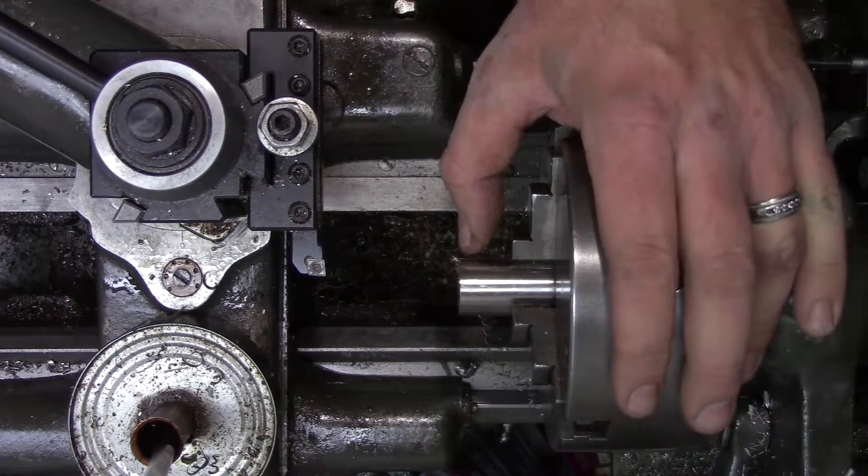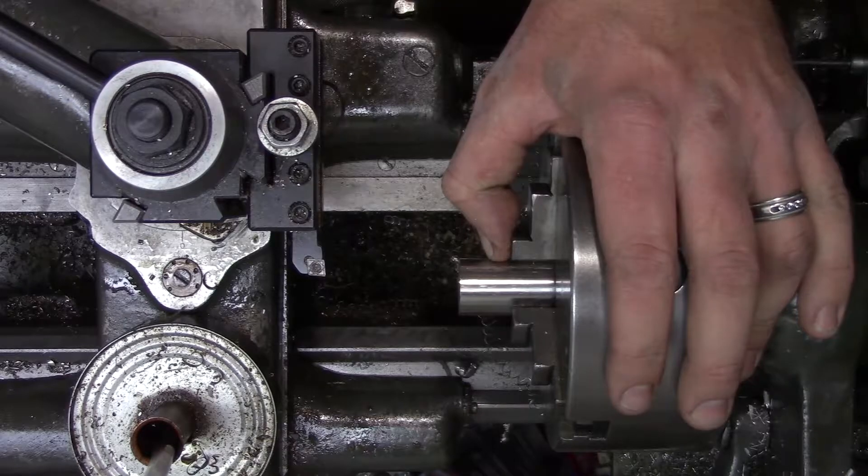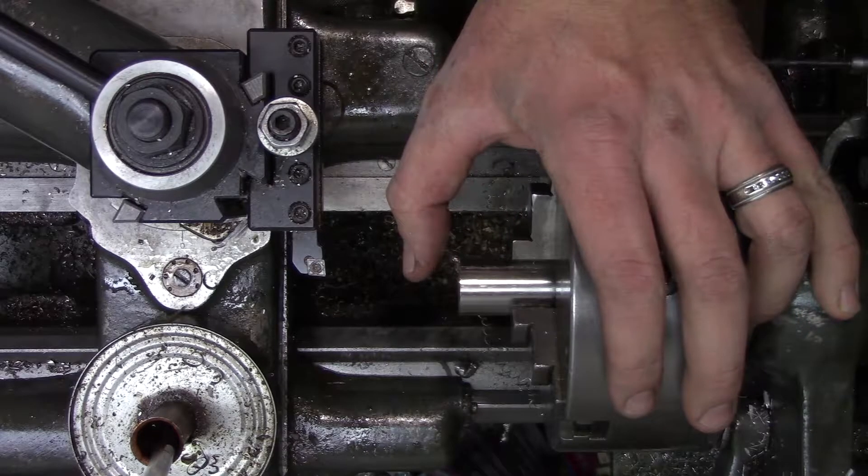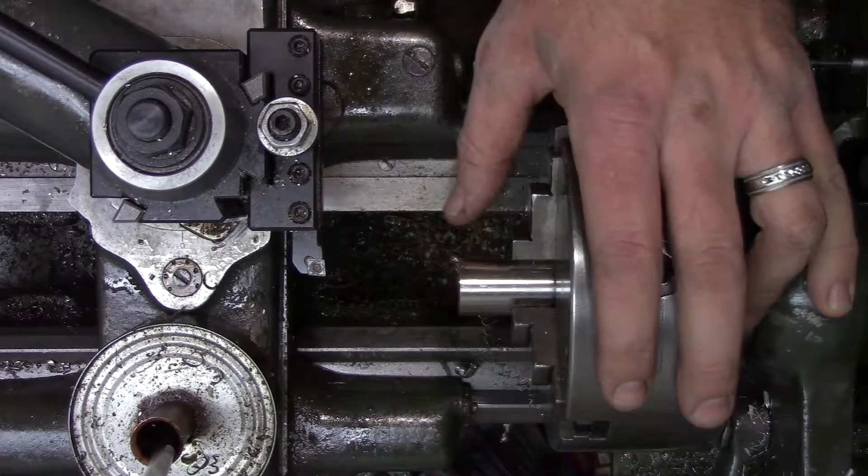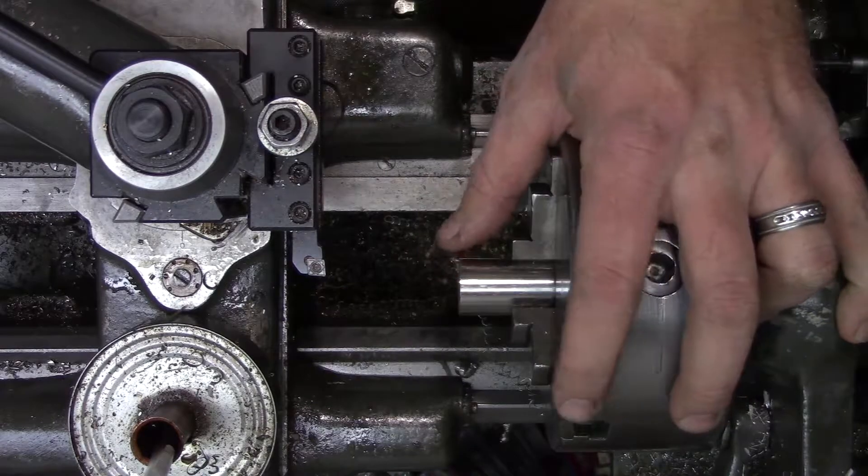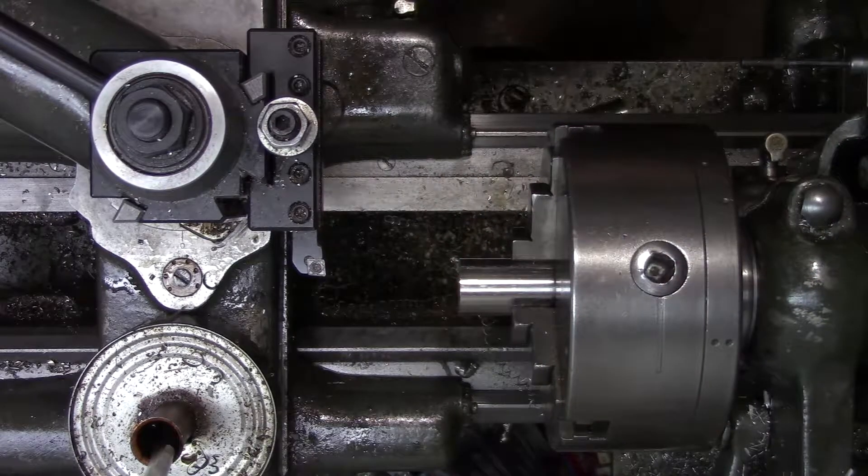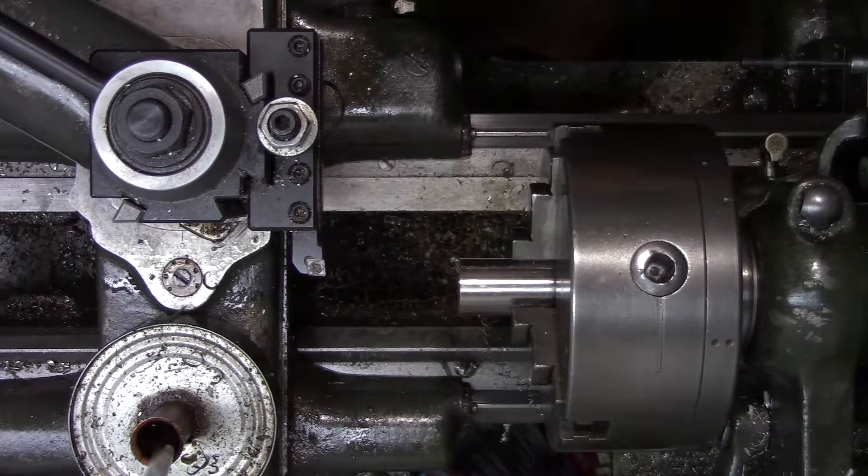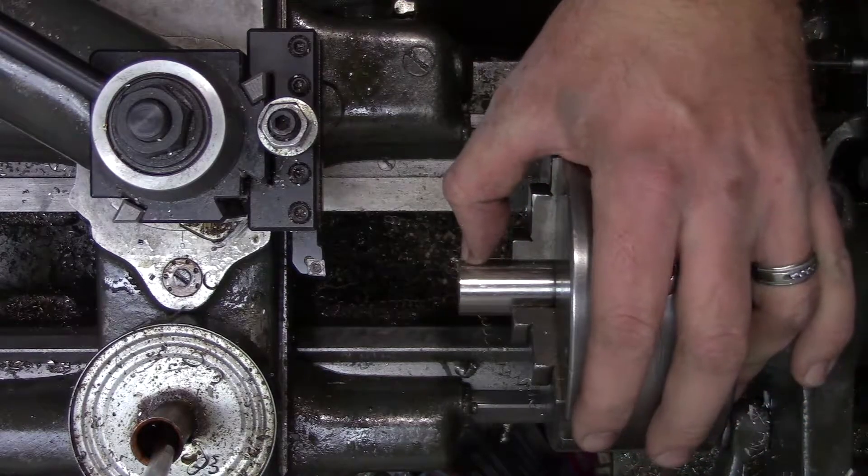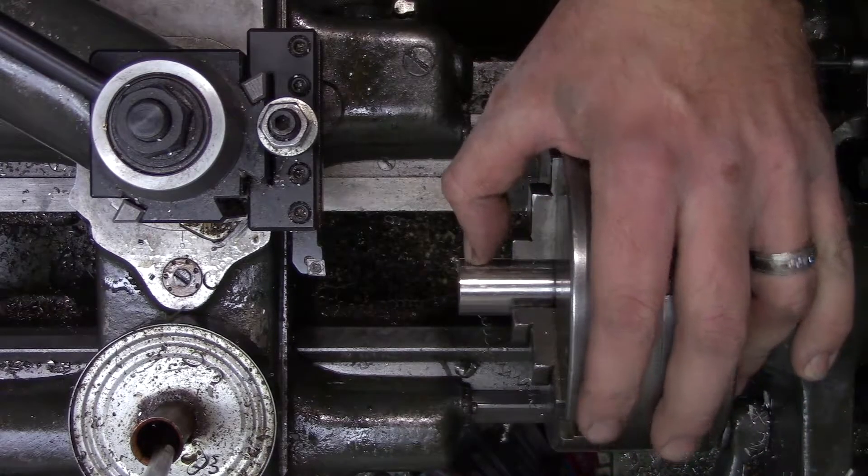Now what we're going to do is we're going to turn this down to three quarters of an inch and then we're going to drill and ream an eighth inch hole in the center for the crankshaft. And then we're going to do offset drilling to do the crank pins.